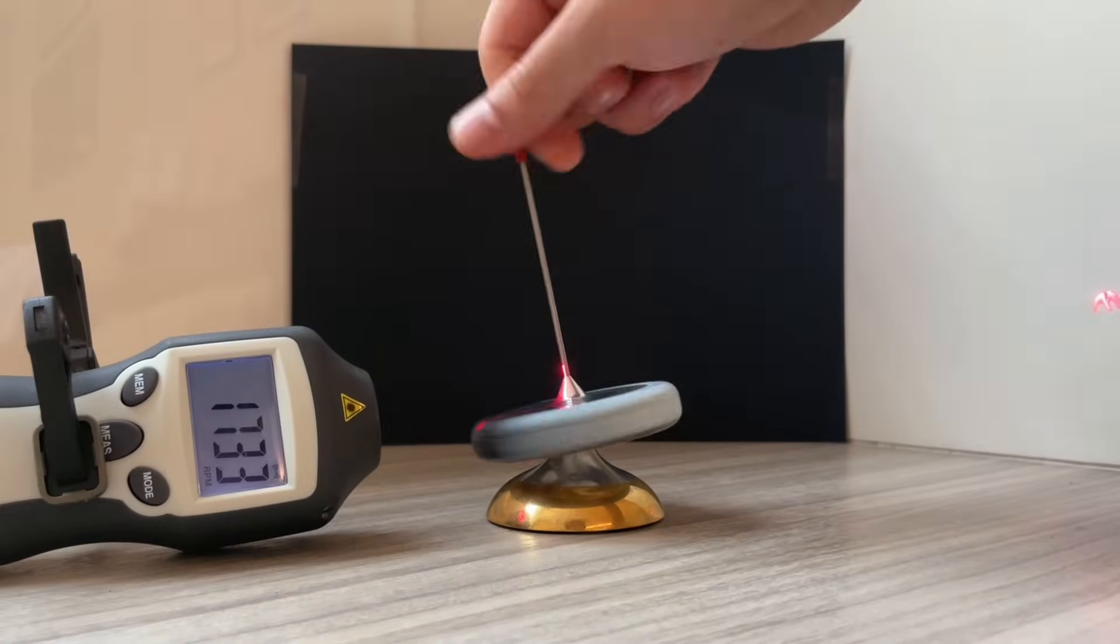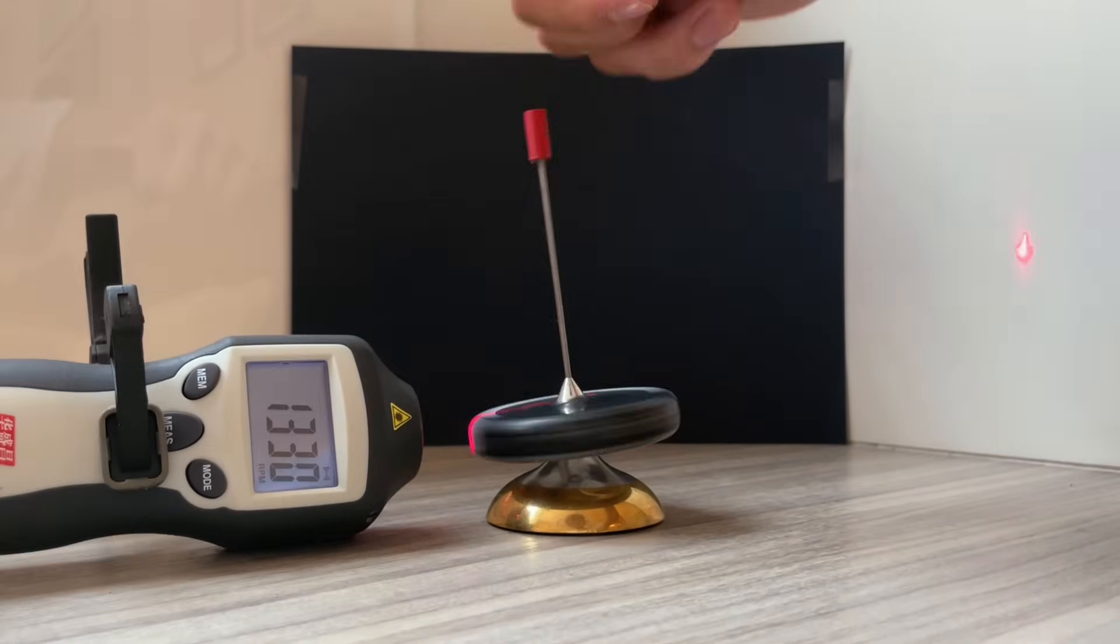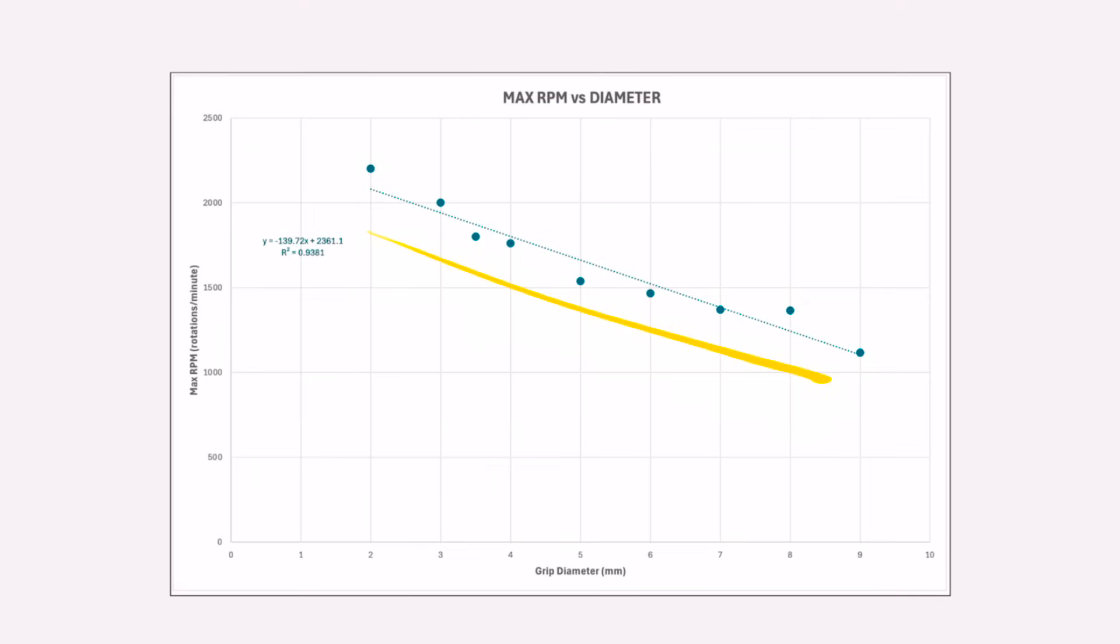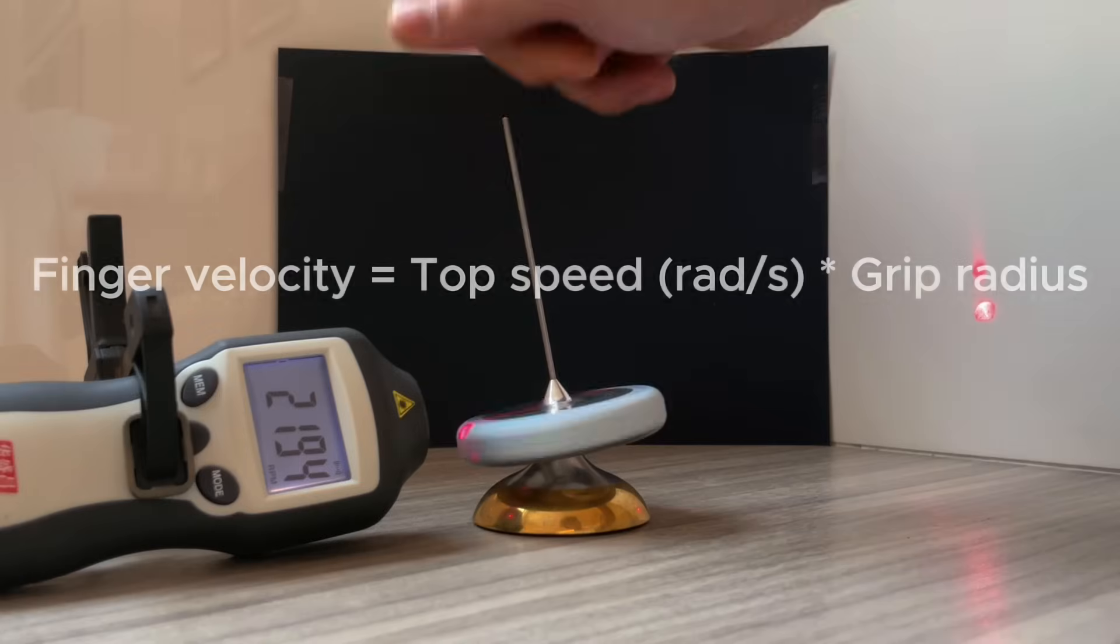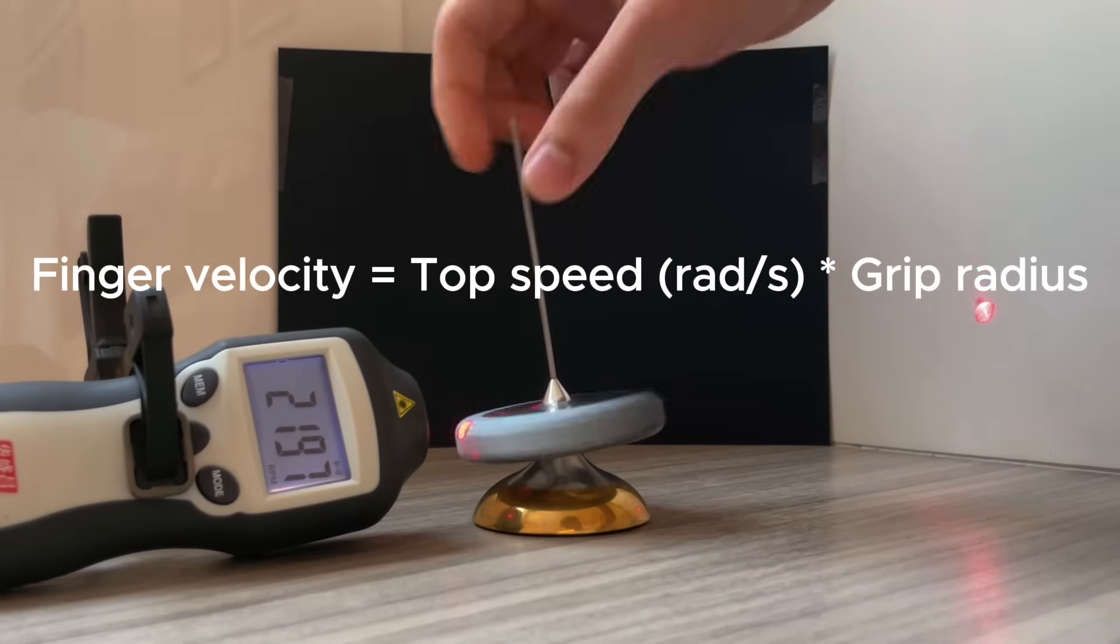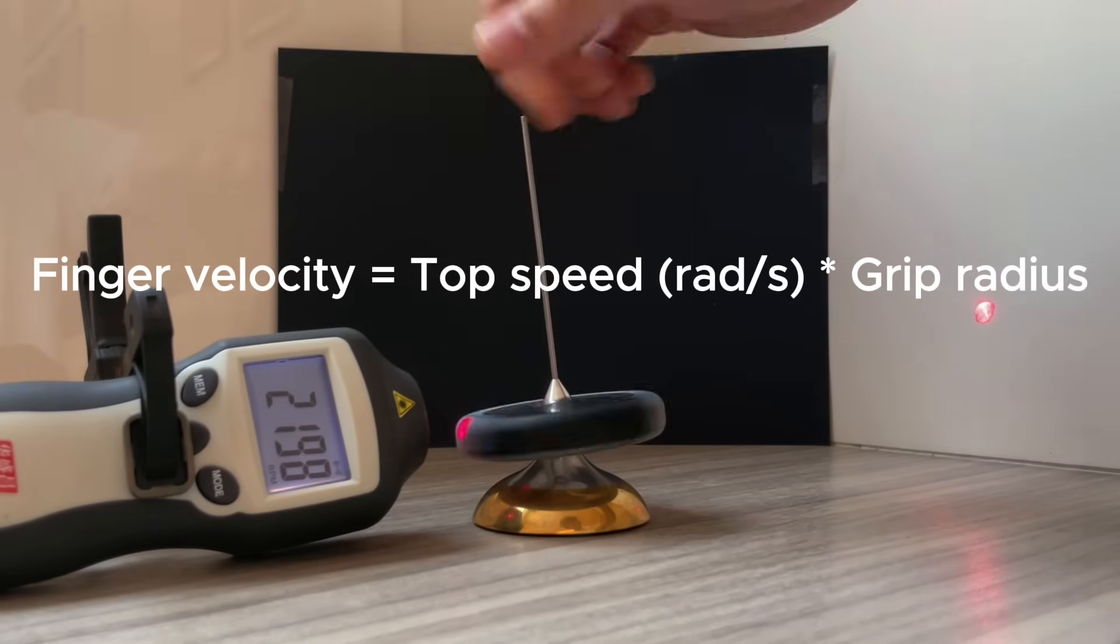Let's start by testing the most important variable, diameter. I've got to say, the results of this test really surprised me. There's a clear negative linear relationship between starting speed and diameter. That's right, just the stem alone, which provides the least torque, starts the top the fastest. How can this be? Well, it's because the limit isn't your strength, it's how fast you can snap your fingers. A handy formula to explain this says, v equals omega r, where velocity is the speed of my fingers, omega is the rpm of the top, and r is the radius of the grip. Now it's easy to see that if maximum finger velocity is fixed, then we want the radius of the grip to be as small as possible.